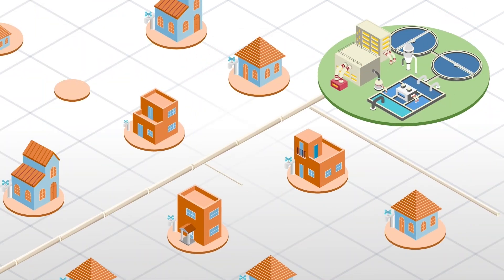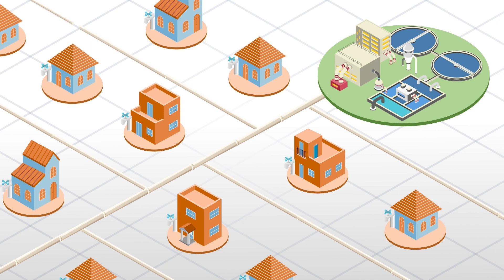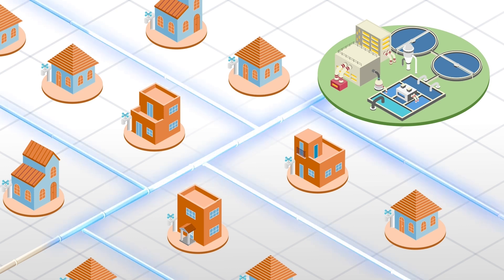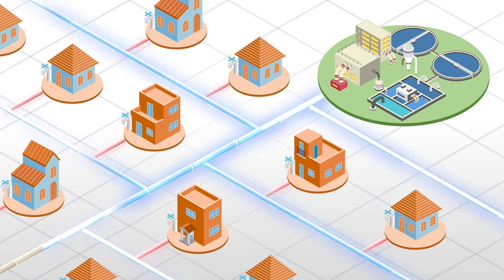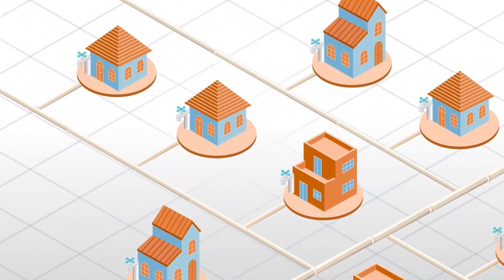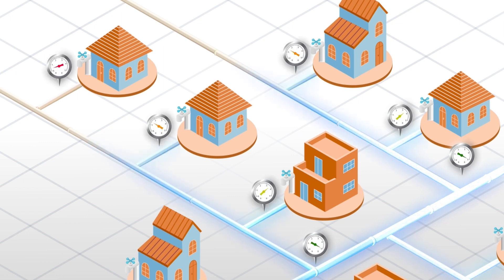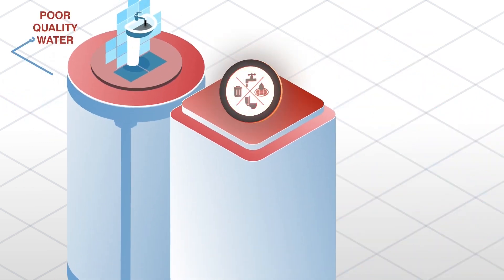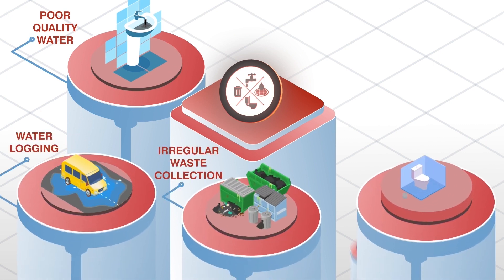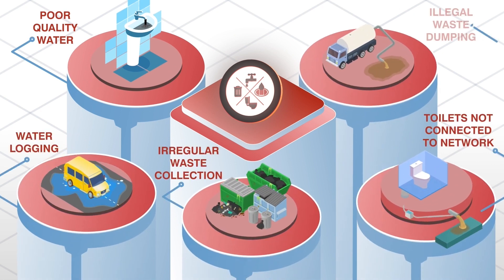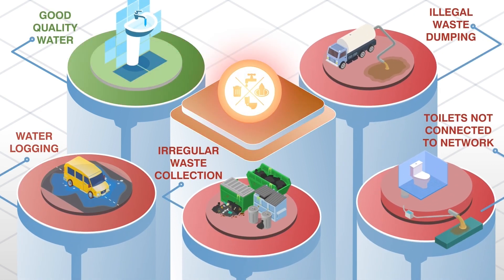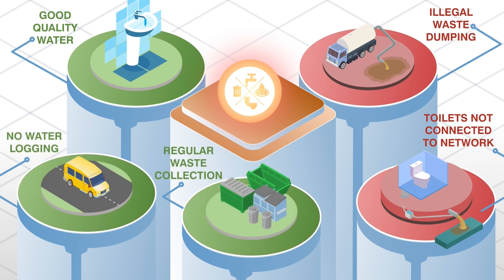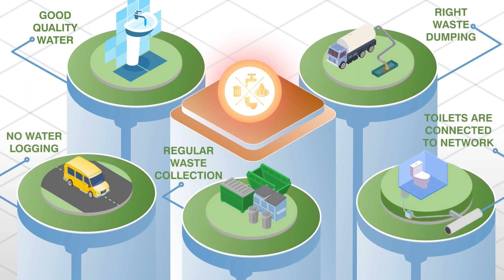For example, in some cases, water supply infrastructure is built, but household connections are not provided. And where connections are provided, the quantity of water supplied is not adequate. So against such high resource allocation, it is important to track the performance of the water and sanitation services provided by the city through service-level benchmarks.